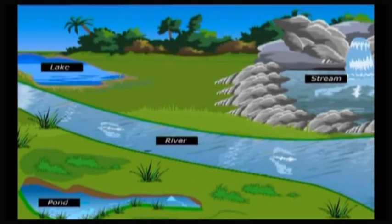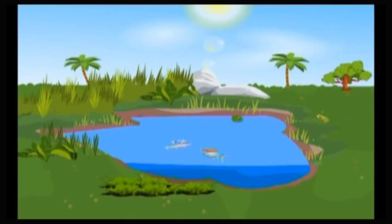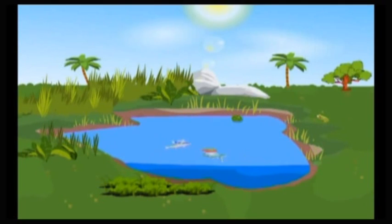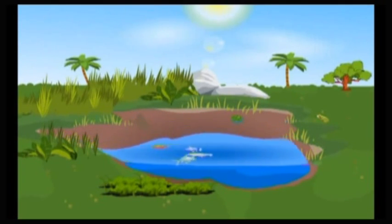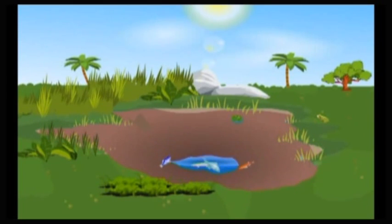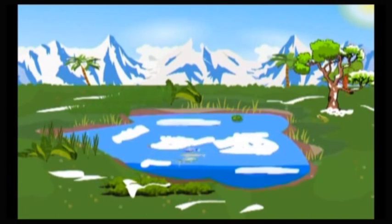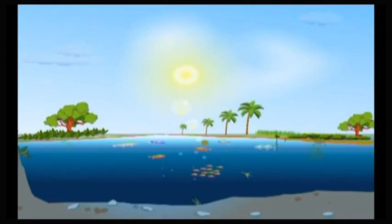Though the factors affecting the life in freshwater are seen in ponds, lakes, and rivers, there are some differences. Ponds are much smaller in size and are not very deep. Hence, the amount of light, temperature, oxygen, and nutrients available are more or less uniform at all depths. However, during summer months ponds dry up completely, and during winter water in ponds may freeze. Both result in the death of the organisms. Lakes are bigger and deeper than ponds.